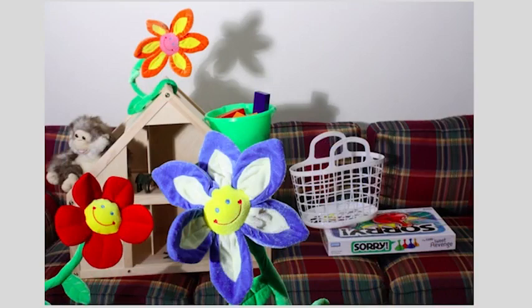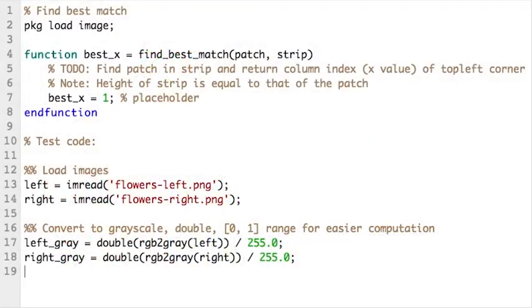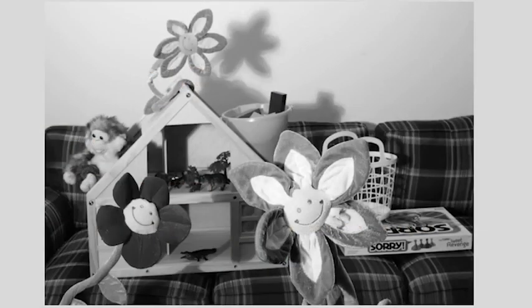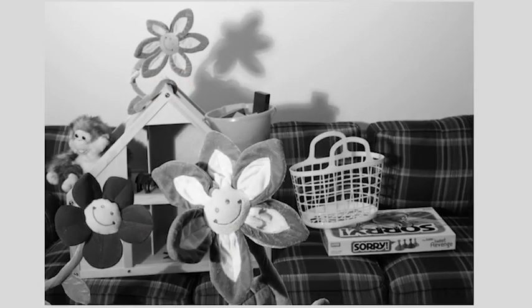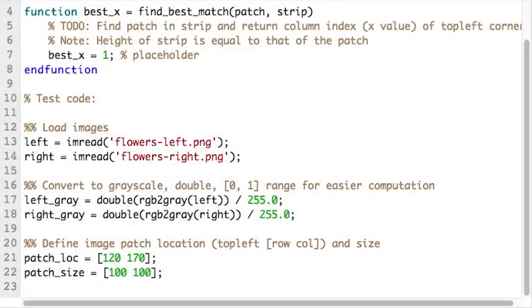If I switch between the two, you can see some key elements moving. Let's convert these to grayscale, double type, and scale them down to zero, one range. Here are the grayscale versions, left and right.